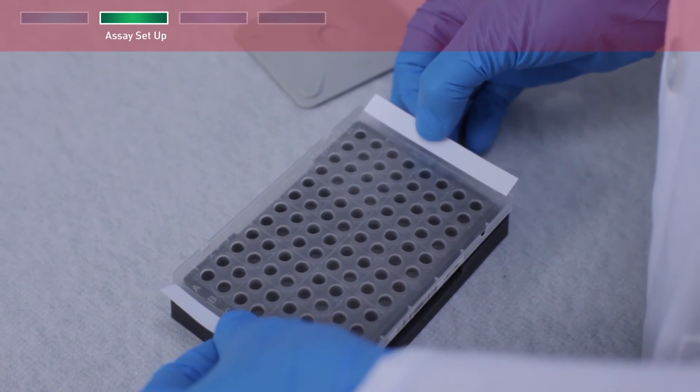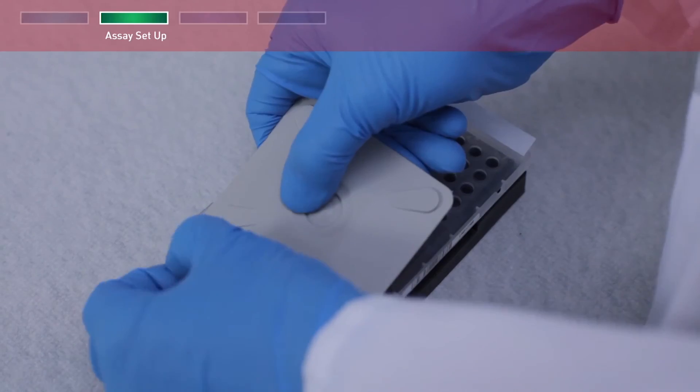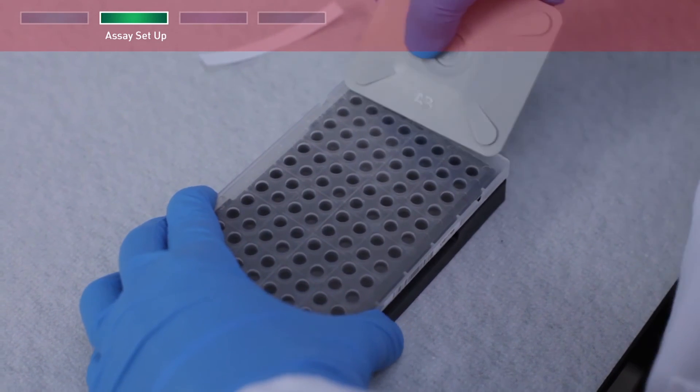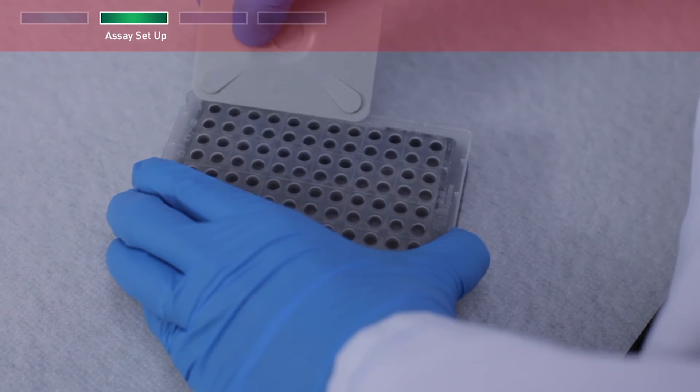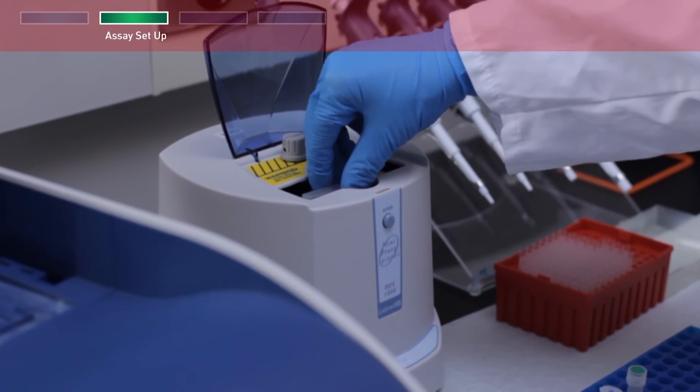Seal the plate with an optical film. Ensure a tight and even seal between all wells and along all edges to minimize the risk of cross-contamination. Then quick spin with a centrifuge rotor that is compatible with 96-well plates.